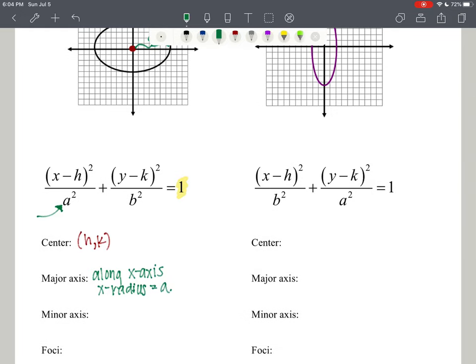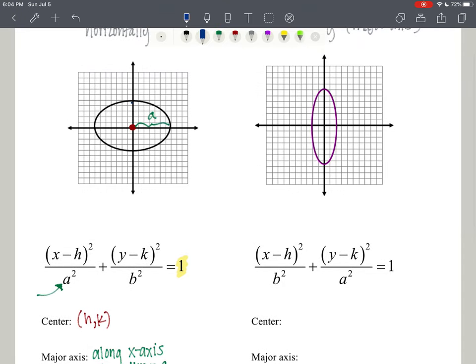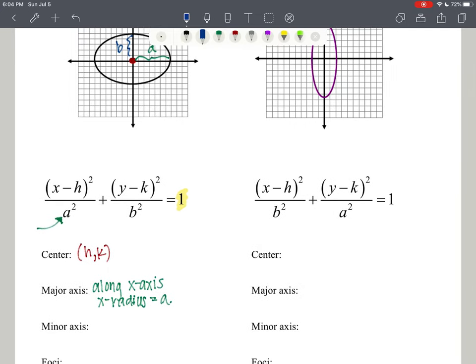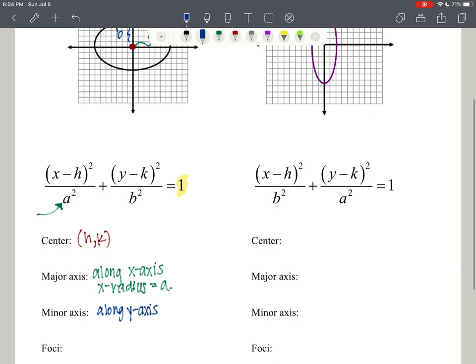The minor axis is going to be on the vertical axis for this particular ellipse, so the minor axis is along the y-axis. I like to call that the y-radius, which in this case is b.